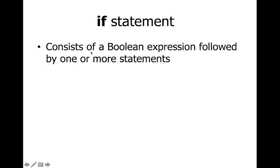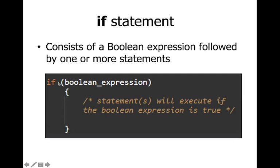The if statement consists of a boolean expression followed by one or more statements. It should return either true or false. In C, every non-zero and non-null value is true, and zero and null are false. The keyword 'if' must be written in small letters, with a boolean expression written inside parentheses.